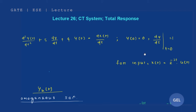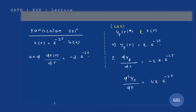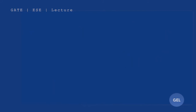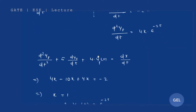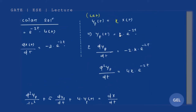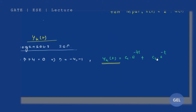The input is e^(−2t)·u(t), whose derivative is −2·e^(−2t). For the particular solution, we assume yp(t) = k·x(t). We substitute x(t) and take its derivative and double derivative, because we are going to put this value into our normal differential equation. Putting this into the equation gives us an expression in terms of k, from which we find the value of k, and substituting back gives us our particular solution.